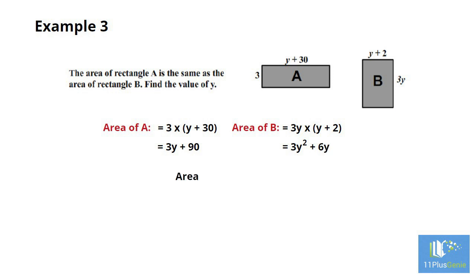Area of rectangle A equals the area of rectangle B. 3y plus 90 equals 3y squared plus 6y. We can simplify this equation by subtracting 3y from both sides to give 90 equals 3y squared plus 3y.